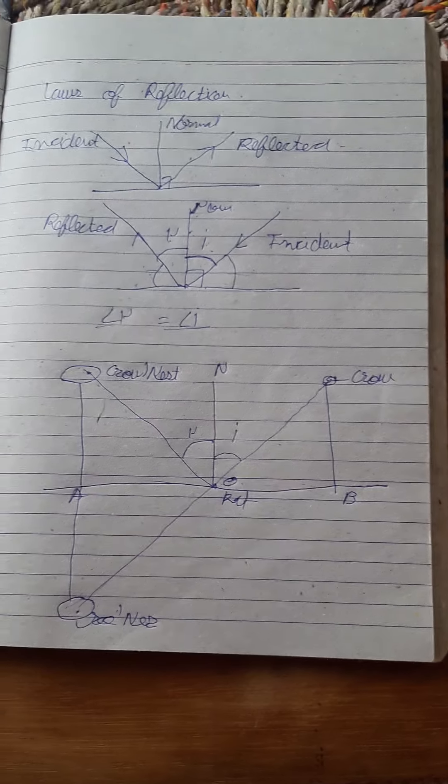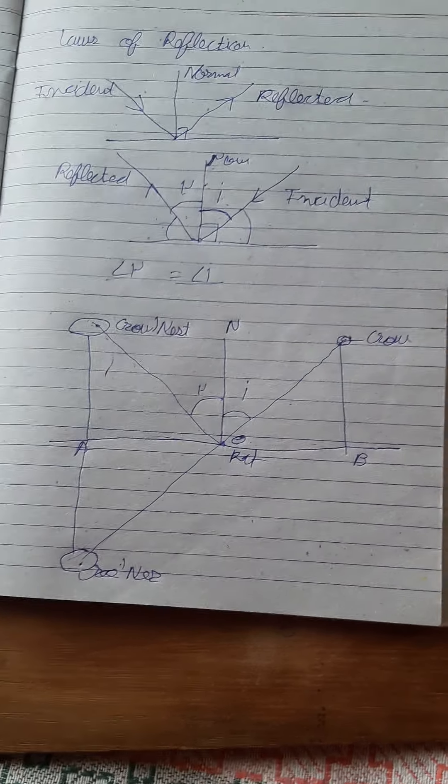Now let's learn about image formation. How is an image formed? How do we see? When two light rays meet at a point, we say an image is formed there. There are two types of images: real and virtual.